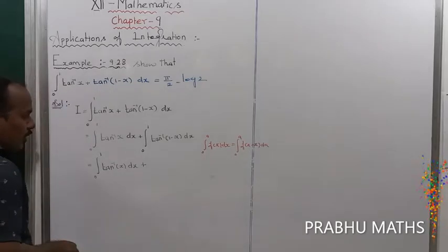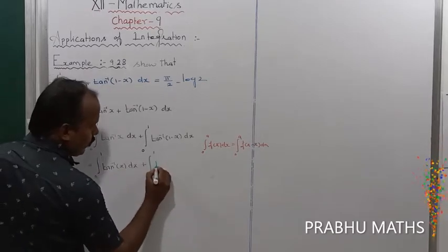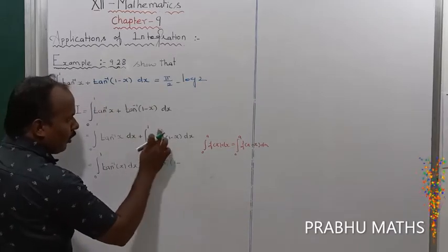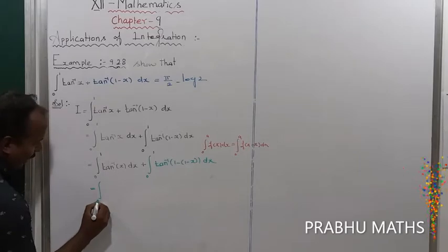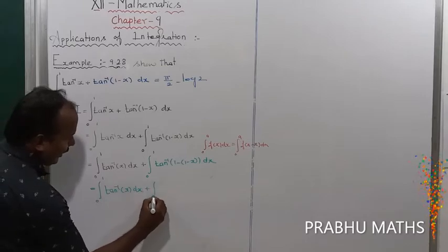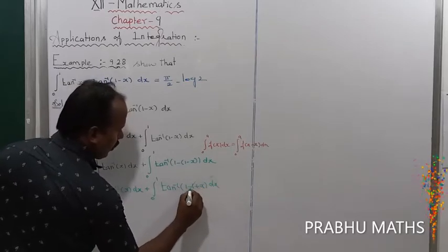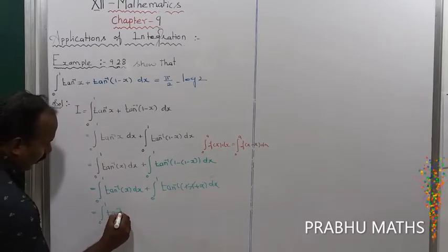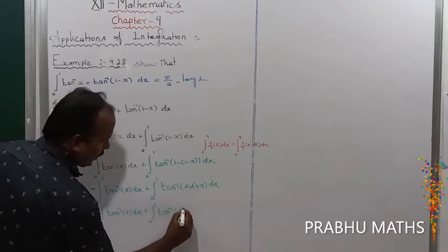Now apply the second term using the formula. So integral half into 0 to 1 of tan inverse of (1 minus x), where x is replaced by (1 minus x), so 1 minus (1 minus x) gives x. The result is integral 0 to 1 of tan inverse of x dx, plus integral 0 to 1 of tan inverse of (1 minus 1 plus x) dx, and this simplifies — the 1 minus 1 cancels.